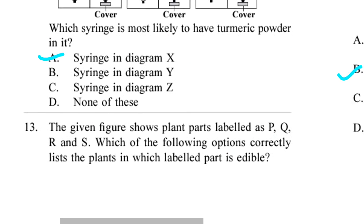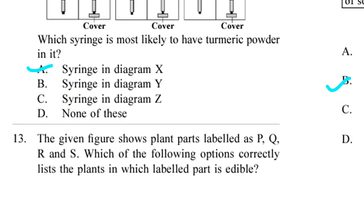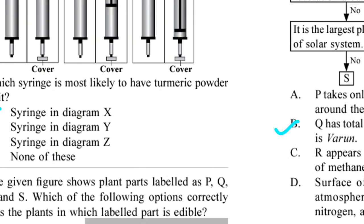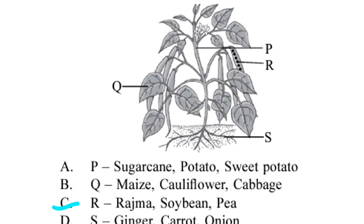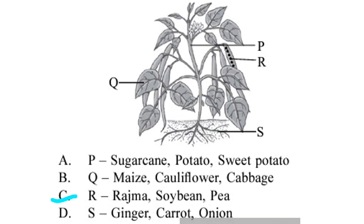Question 13. The given figure shows plant parts labeled as P, Q, R and S. Which of the following options correctly list the plant in which labeled part is edible? Answer is option C. R can be rajma, soybean and peas.